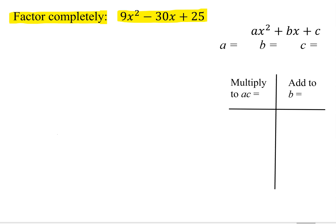And if you look at these numbers, 9, negative 30, and 25, there's no common factor there. And they do not all have an x in common.